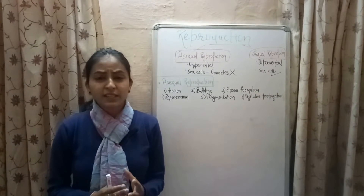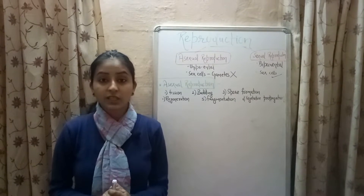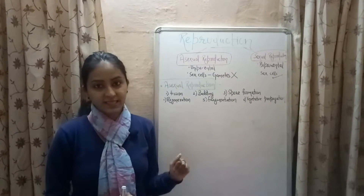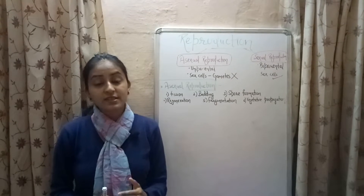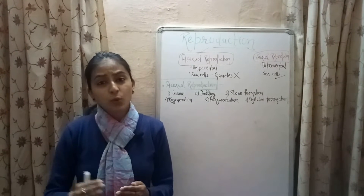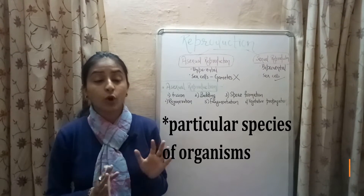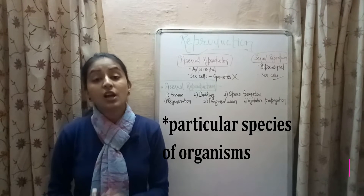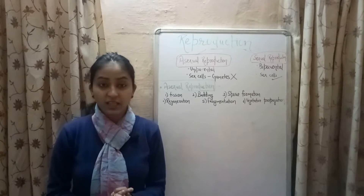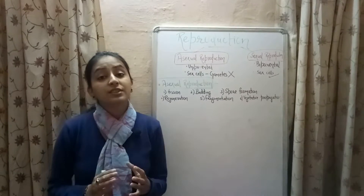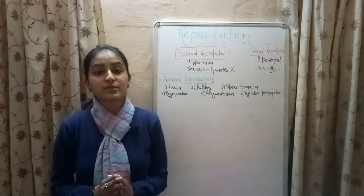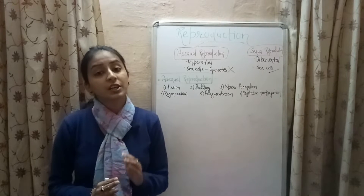Why is reproduction essential? Reproduction is important because it ensures the continuity of life on this earth. For example, when the old grandparents die, their children continue to live on this earth, and then their children reproduce and their children continue to live. So this process goes on and on. If there is no reproduction among a particular species, there will come a time when there will be no organism of that species, so reproduction prevents extinction.